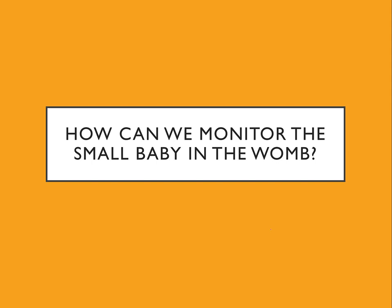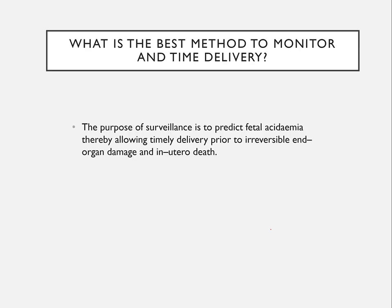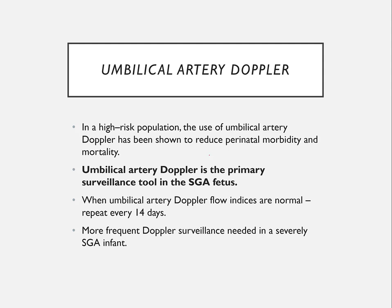Once a small baby is identified and confirmed with ultrasound measurements, we follow up using various Doppler and other parameters to monitor for real hypoxia or acidemia (acidemia results from hypoxia due to increased lactic acid). The goal is to identify these babies and deliver them timely, preventing irreversible brain damage or death. The first-line surveillance tool in small for gestational age babies is umbilical artery Doppler — if all indices are normal, repeat observations in 14 days; if severely growth-restricted or severe SGA, perform more frequent Doppler assessments.